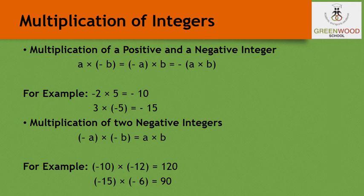Now, multiplication of two negative integers: if we multiply any two negative integers, the answer is positive. For example, minus 10 times minus 12 — multiply 10 and 12 to get 120, and minus times minus is plus, so the answer is 120. Similarly, minus 15 times minus 6 gives 90, since minus times minus is plus.